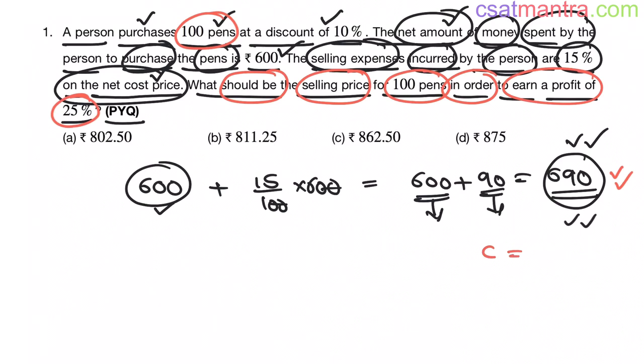So cost is 690 rupees. Now we want selling price of 100 pens. Let's use the only formula we have for profit and loss chapter. That is 1 plus x equals s by c. x is profit or loss percentage value my friends. Here we have profit, so x would be plus 0.25. Plus because profit 0.25, percentage value of 25%.